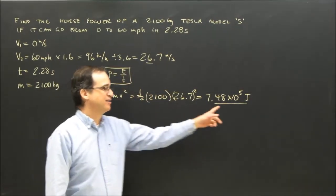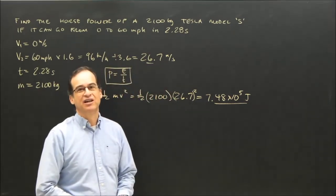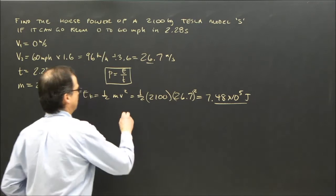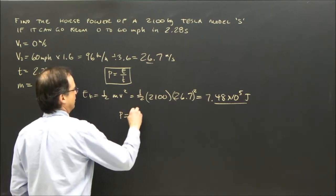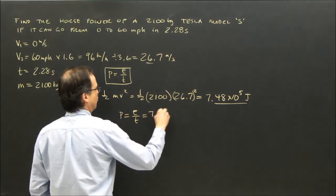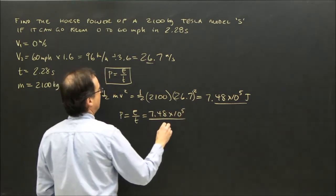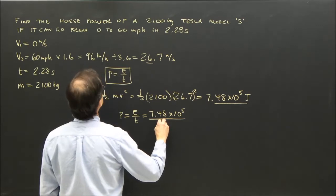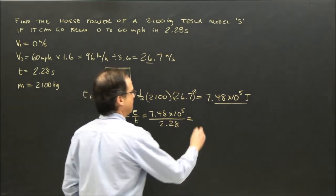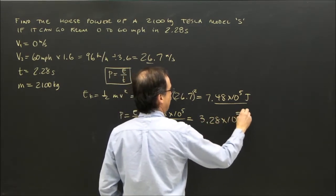We went from 0 to 7.48 × 10⁵ joules. Now I know how much energy was gained and I have the time, so I plug in. Power equals energy divided by time: 7.48 × 10⁵ divided by 2.28 seconds. The power is 3.28 × 10⁵ watts.